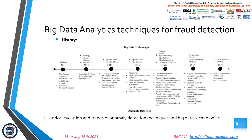For big data analytics techniques for fraud detection, we present here a timeline of historical evolution and trends. For anomaly detection techniques and big data technology, we have Hadoop, Apache Storm, Apache Spark, along with multiple data mining algorithms such as K-means clustering, K-nearest neighbors, hierarchical temporal memory, etc.